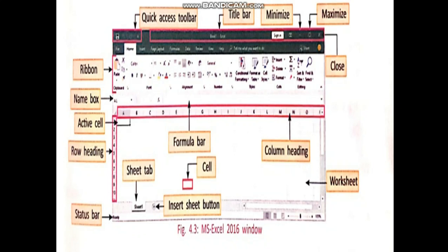Next one, formula bar. The formula bar shows the characters and formulas that you enter in an active cell. Next one is the name box. It displays the cell address of the active cell.